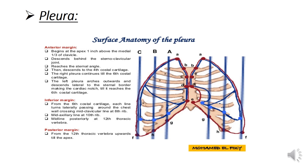Regarding the surface anatomy of the pleura: the cervical pleura is represented by a triangular dome extending two and a half centimeters above the medial third of the clavicle. The anterior margin begins at the apex, then descends behind the sternoclavicular joint and reaches the sternal angle, then descends to the level of the fourth costal cartilage. The right pleura continues downward to the sixth costal cartilage, while the left pleura arches outward lateral to the sternal border, making the cardiac notch, until it reaches the sixth costal cartilage.